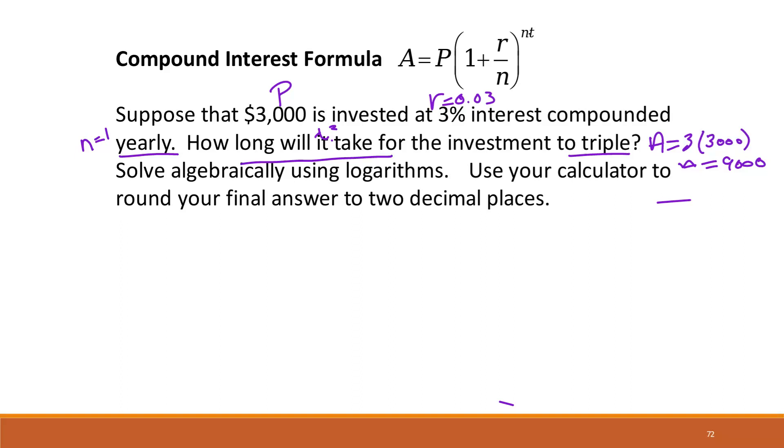So now we have everything we need to go ahead and solve. We have 9,000 for A, 3,000 for P, times 1 plus 0.03 for r, 1 for n, and a t. We can simplify this down to 9,000 equals 3,000 times 1.03 to the t.